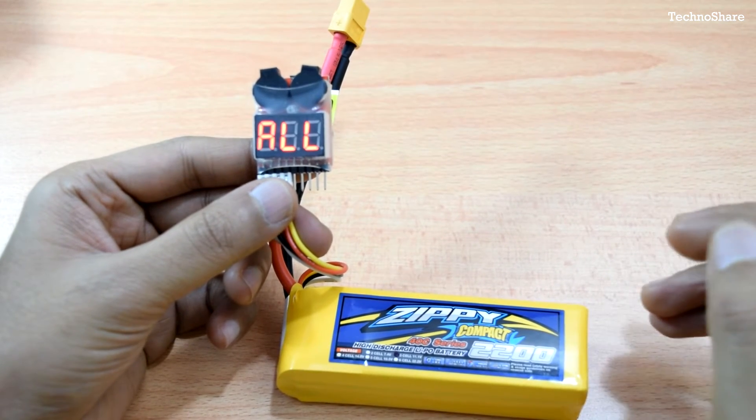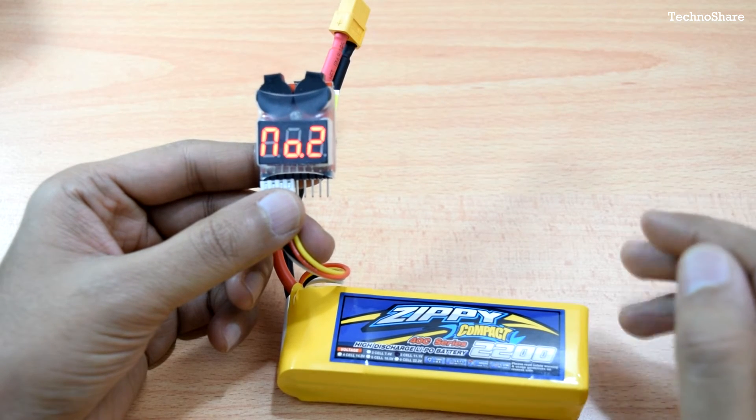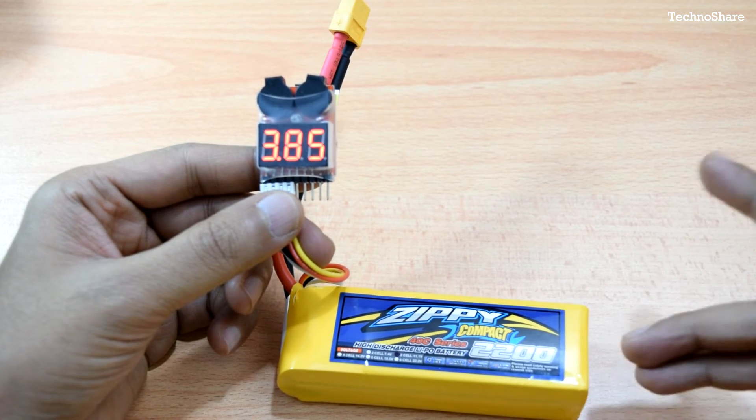Now for those of you who are new to LiPo batteries. These are high discharge rate rechargeable batteries that are used in radio controlled cars, helicopters or toys.